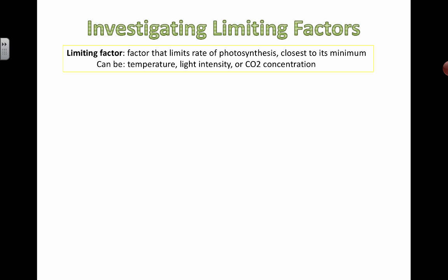For photosynthesis, you should know you've got light, you've got temperature, and you've got carbon dioxide concentration, which are three pretty standard ways to test the effect of a factor on photosynthesis. A limiting factor would be the one factor that is really controlling the rate of photosynthesis. There's really only one at any given time that's the slowest step in the entire process.